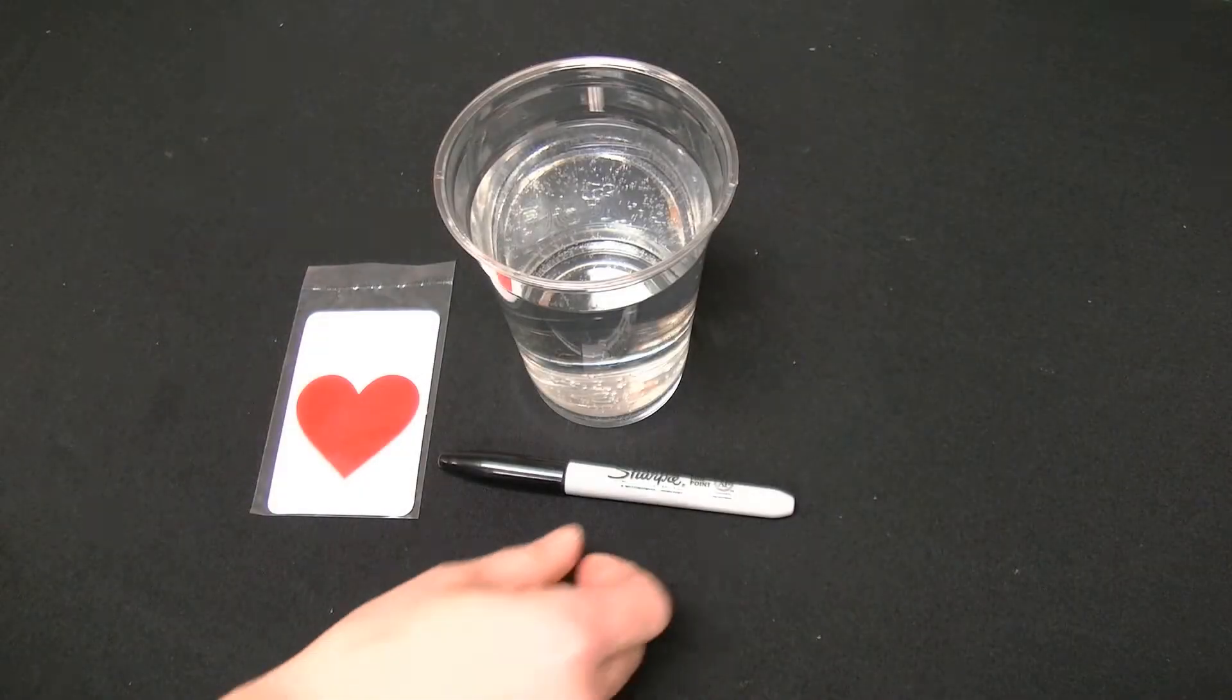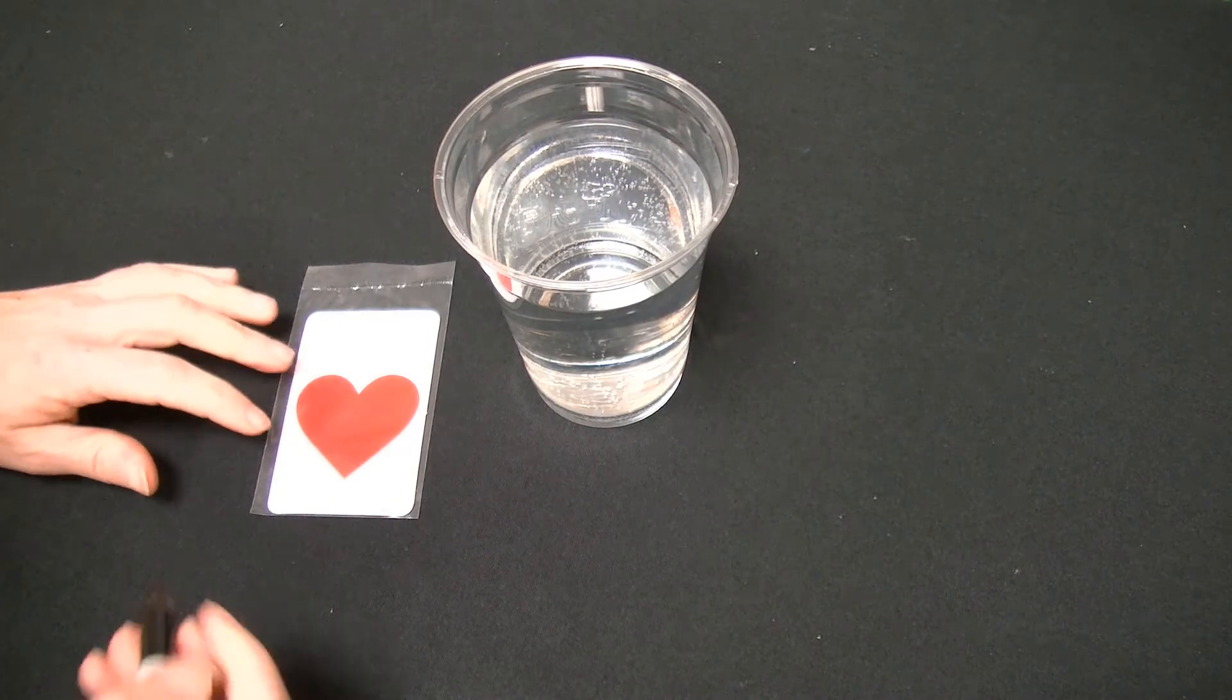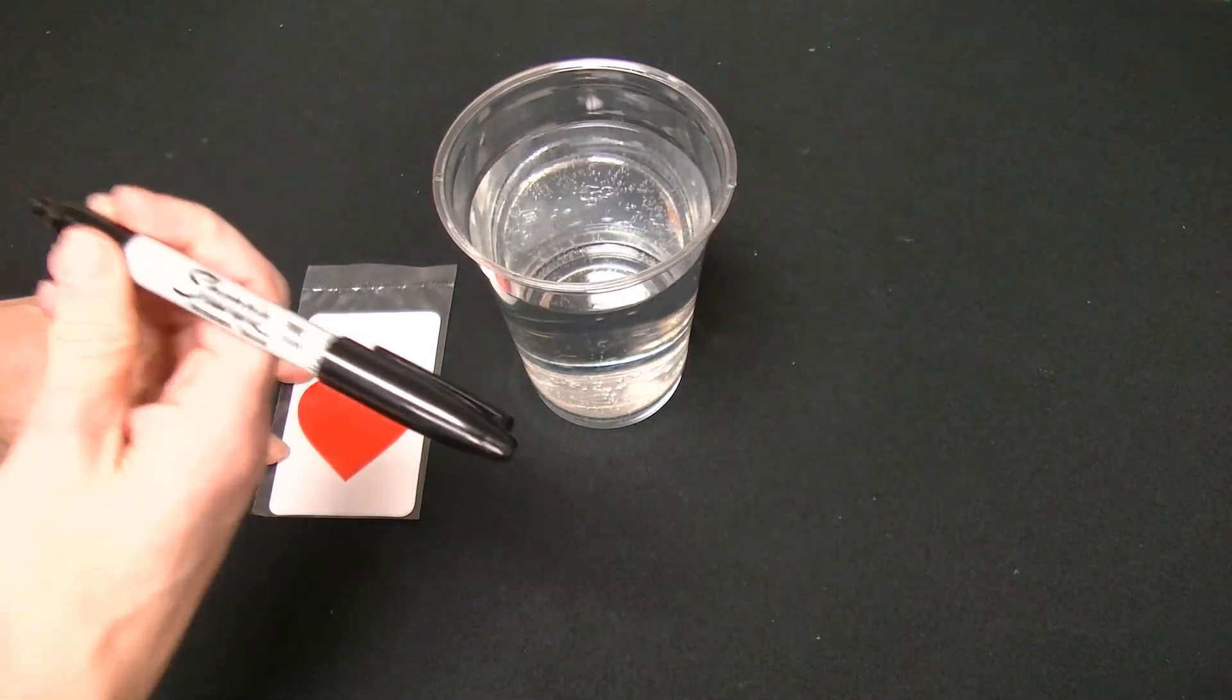Here's how your disappearing dippers will work. Kids will start out by writing the name or drawing a picture of someone they love in the heart. You're going to want to use a permanent marker for this. For example, 'I love my mom.'